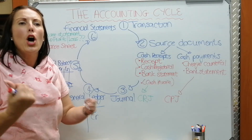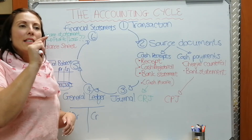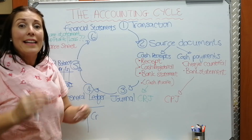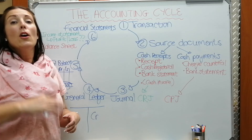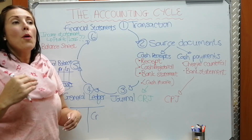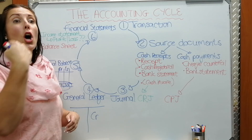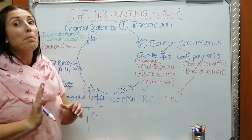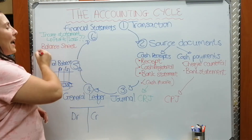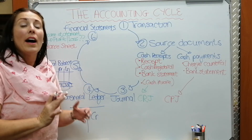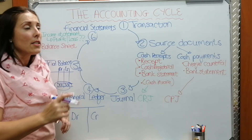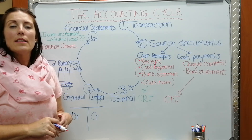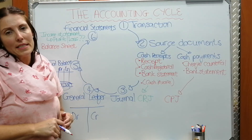We look at the total value of money owed to the business and how long it takes for debtors to pay. If it takes too long, it can put the business in a bad financial position. We also look at how much the business owes to creditors and how long it takes to pay them back. Investors specifically look at the balance sheet when deciding whether to invest in a company.